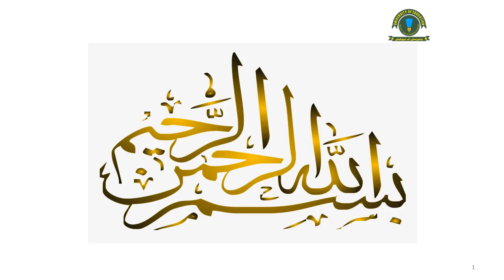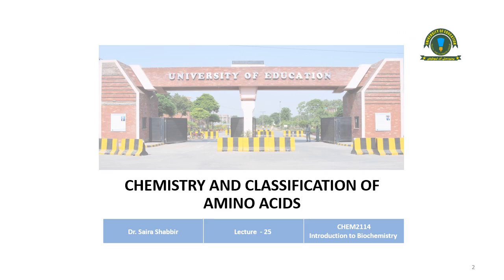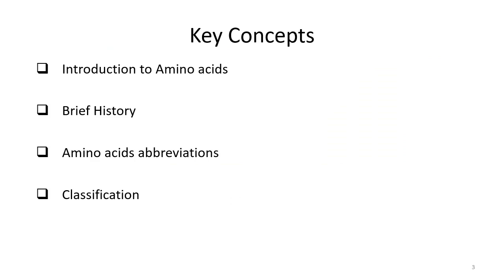Bismillahirrahmanirrahim. Today is the 23rd lecture of Introduction to Biochemistry and we are going to discuss the chemistry and classification of amino acids. In today's class we are going to discuss the introduction of amino acids, which compounds are called amino acids, how they differ from other groups, and a brief historical background of amino acids.